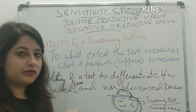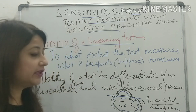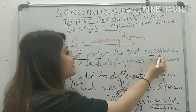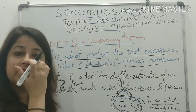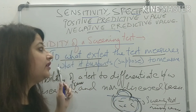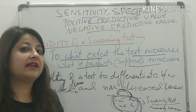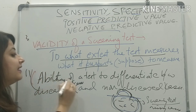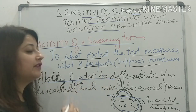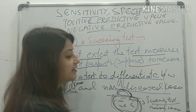Before we go to that, there is one term you should know — validity of a screening test. What is validity? It simply means to what extent the test measures what it is supposed to measure — what is that extent to which my screening test is going to measure what it is supposed to measure.